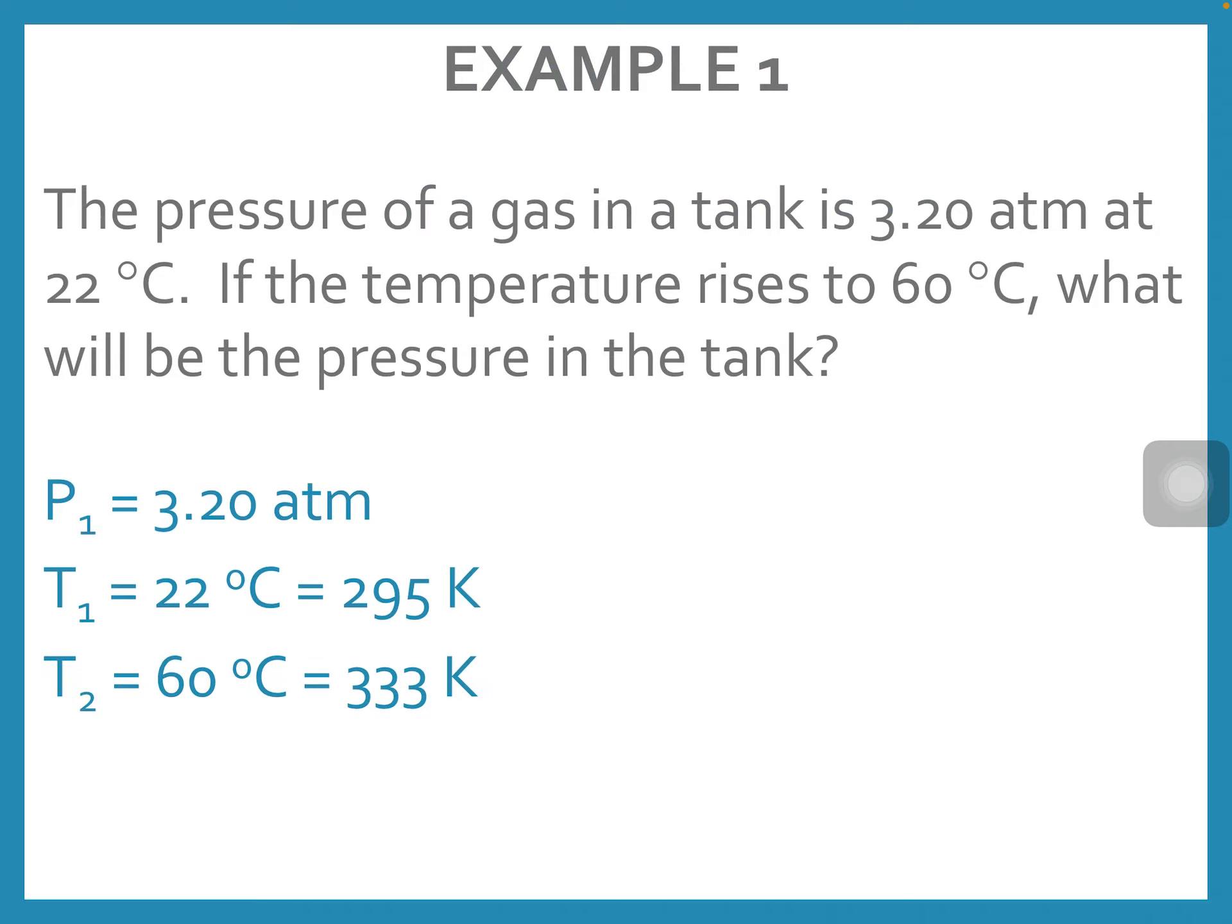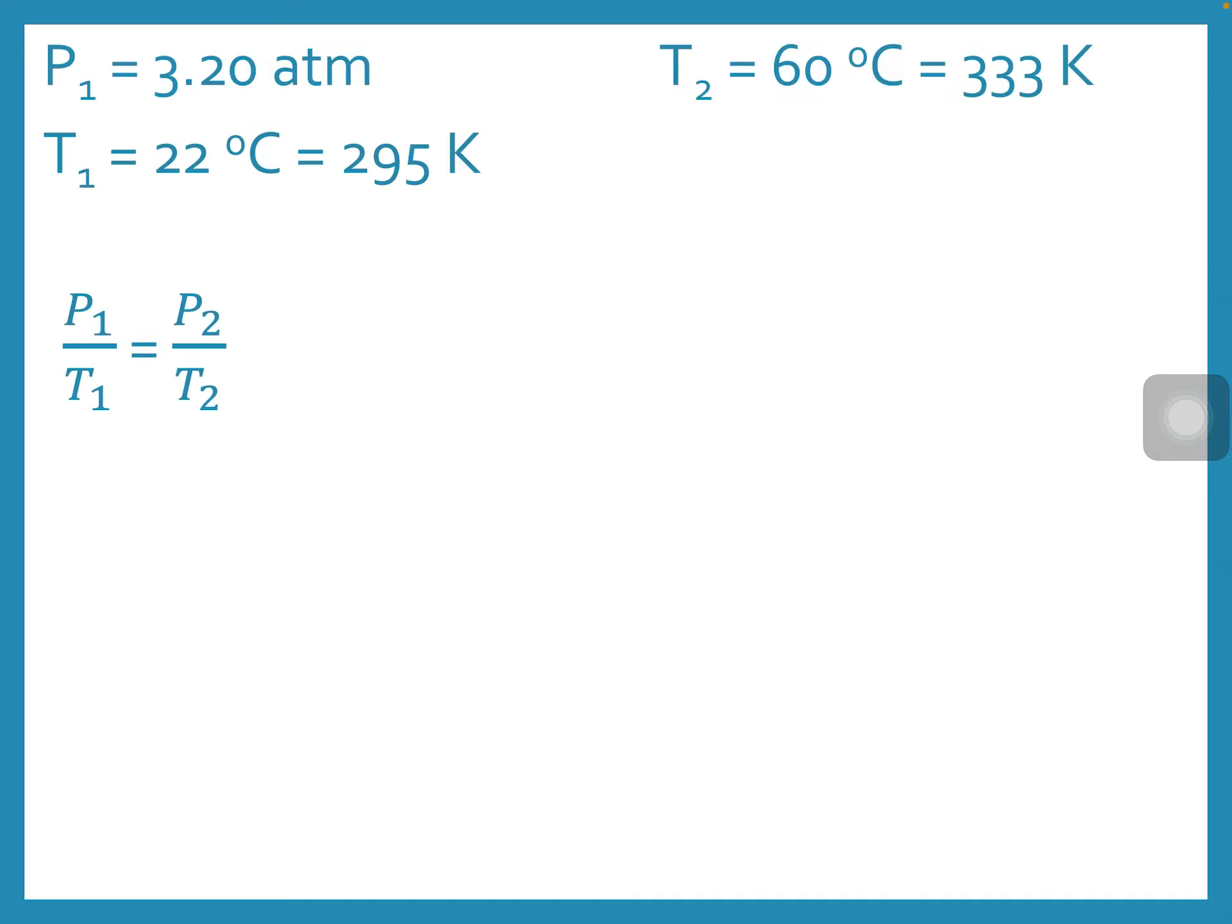And we have our temperature rises to 60 degrees Celsius, which plus 273 gives us 333 Kelvin. So we have all those pieces of information, P1 over T1 equals P2 over T2. We'll pop in those values, and we're looking to solve for final pressure.